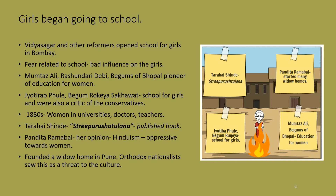Education for girls was another important area where reform was needed. Ishwar Chandra Vidyasagar in Calcutta and other reformers in Bombay started schools for girls. People were afraid initially to send their daughters to school thinking it would have a corrupting influence, but later that changed. Women were also educated at home. Schools were established in the later part of the century by Arya Samaj in Punjab and Jyotirao Phule in Maharashtra. Muslim women too were being educated — reformer Mumtaz Ali reinterpreted verses from the Quran to argue for women's education.